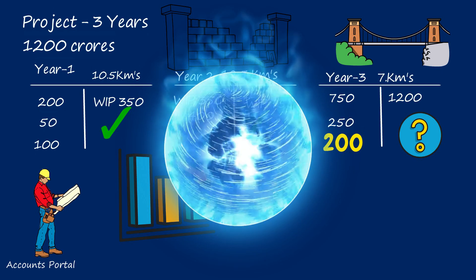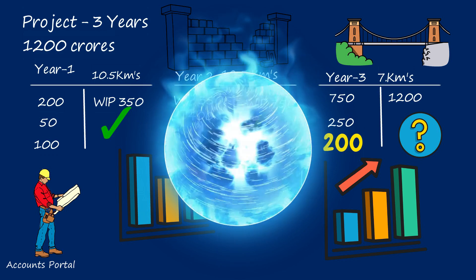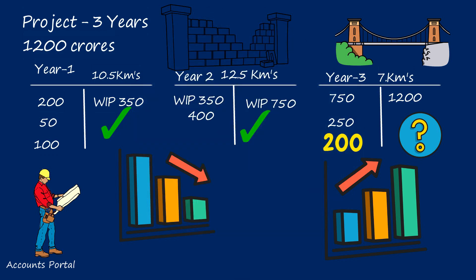First year: no profit. Second year: no profit. Third year: super profits. This is the main disadvantage if you follow normal accounting principles for long-term contracts. For this reason, special principles have been adapted under AS-7. You would like to spread the total 200 crores profit over the lifetime of the contract.